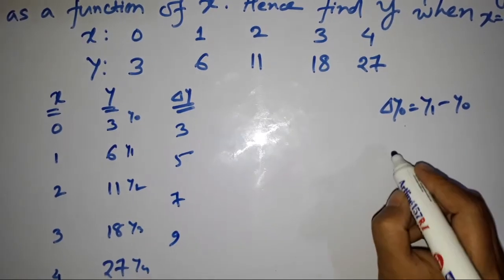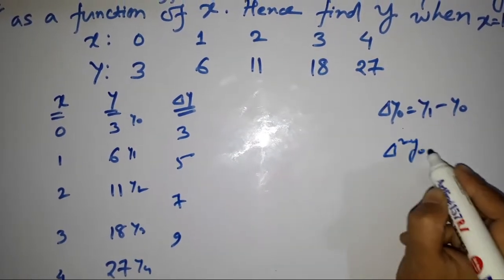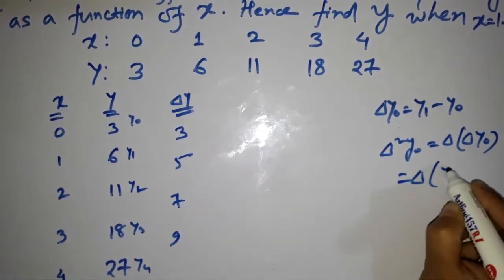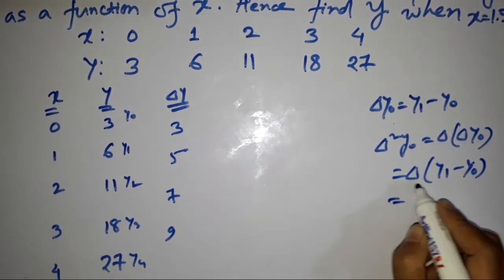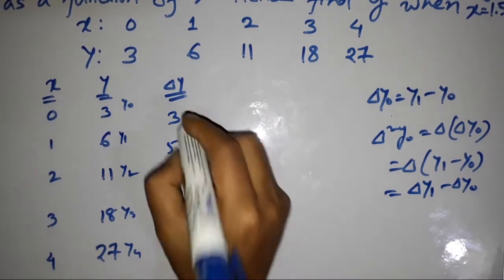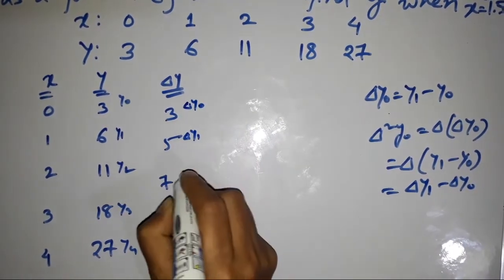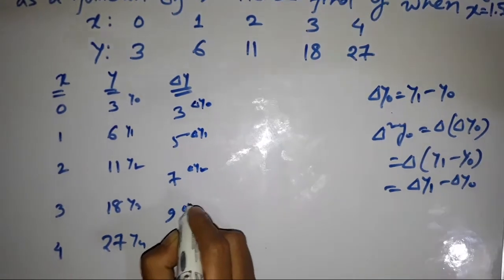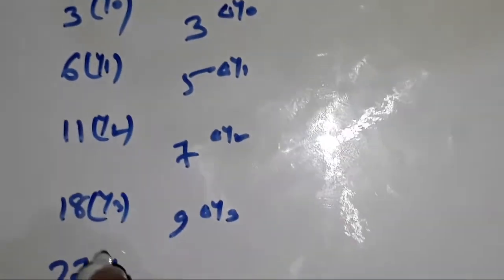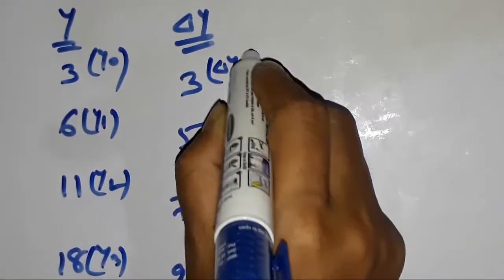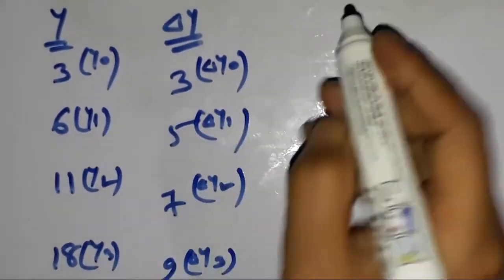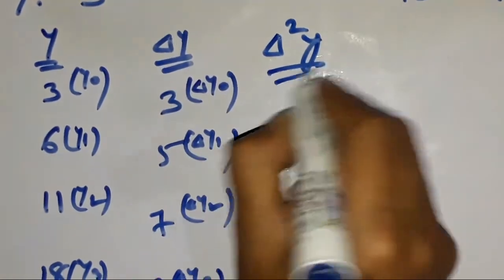Next, Δ²Y₀ means Δ applied to ΔY₀, which equals ΔY₁ minus ΔY₀. We apply Δ to each entry in the ΔY column, giving us ΔY₀, ΔY₁, ΔY₂, and ΔY₃.